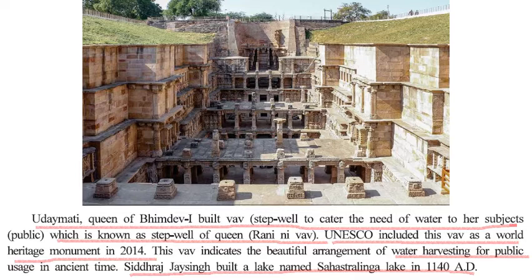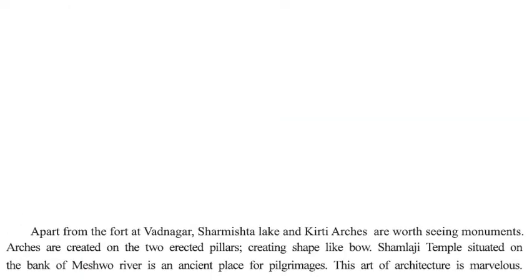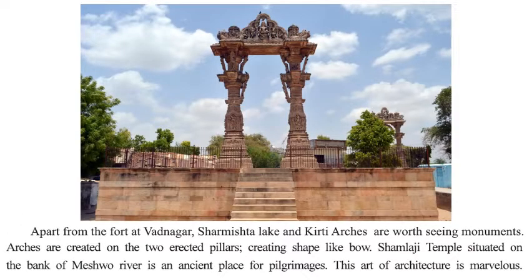This Vav indicates a beautiful arrangement of water harvesting for public usage in ancient times. Rainwater can be stored in this Vav, and there are steps so that as the water seeps deeper, one can approach it using the steps. Sidraj Jaisi built the Sahastralinga Lake in 1140 AD in Siddhapur. Apart from the fort at Vadnagar, the Sharmishtha Lake and the Kirti Toran — arch pillars creating a bow-like shape — are also worth-seeing monuments.